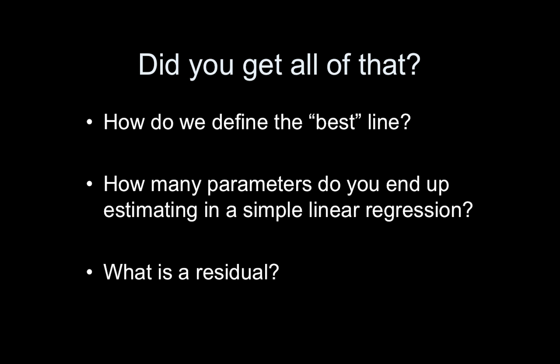Make sure you remember which parameters in the regression are considered fixed, which ones are considered random. How did we define the best line? What is that thing that we minimize? What is that function, that cost function we minimized? How many parameters do you end up estimating in a simple linear regression? And what is a residual?